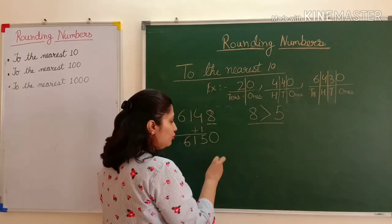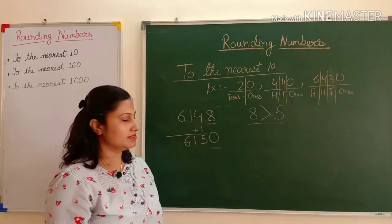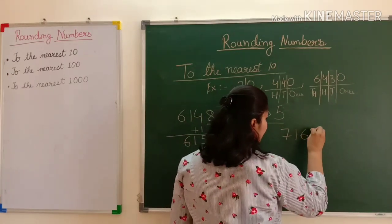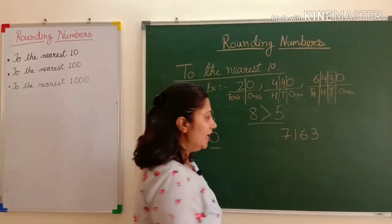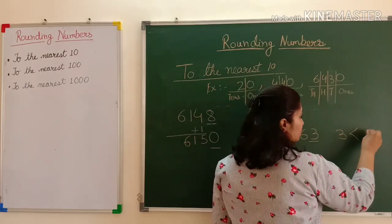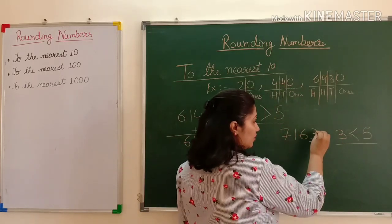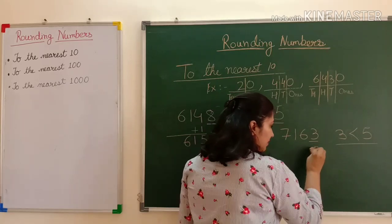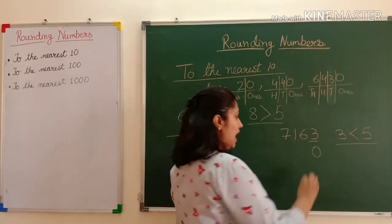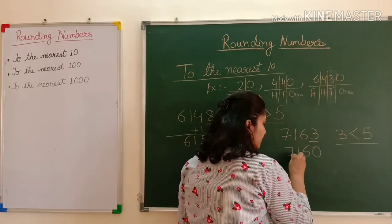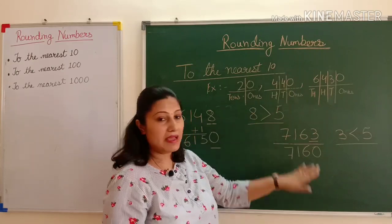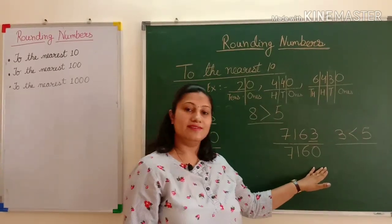Let's see another example: 7163. I compare the ones place digit 3 with 5 — 3 is smaller than 5. So I place zero in the ones place and do not add anything to any other digit; I keep all numbers as they are. When I round off 7163 to the nearest ten, the number is 7160.